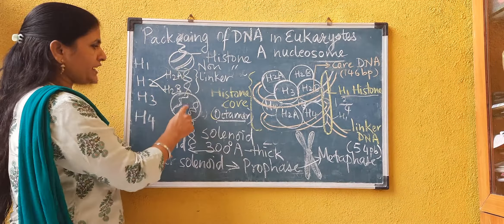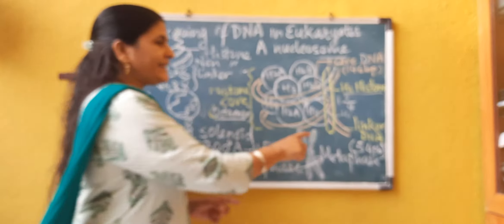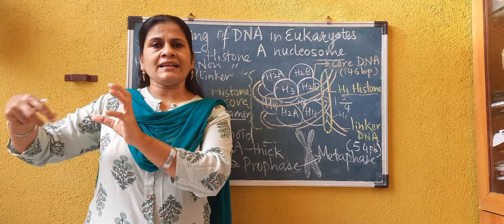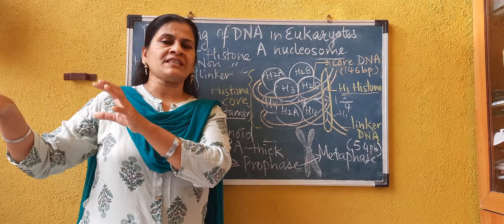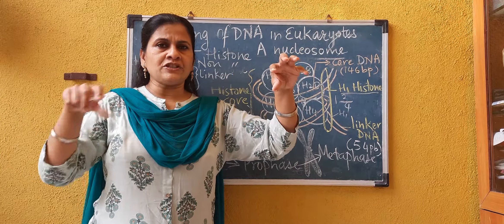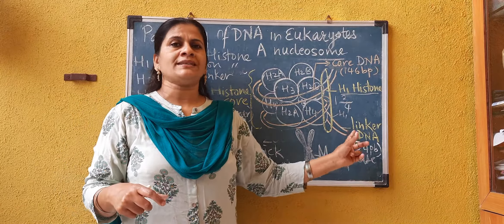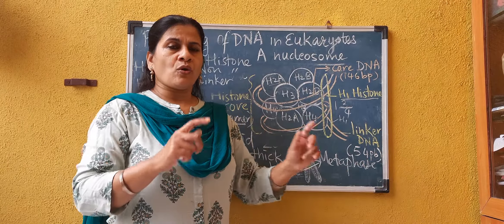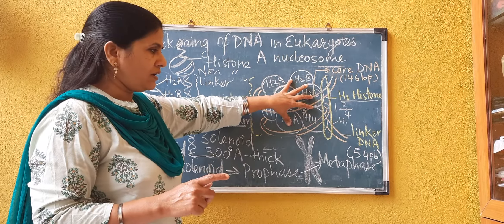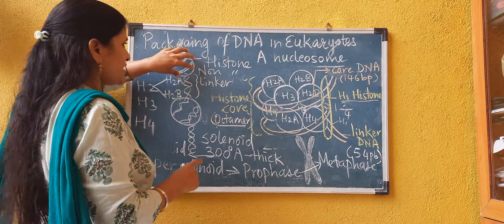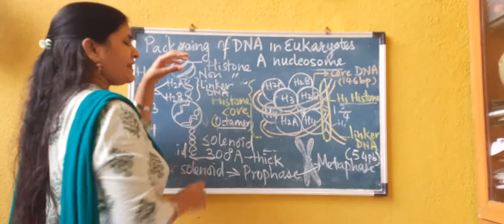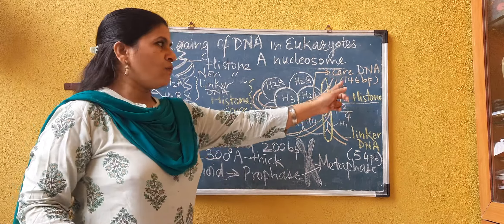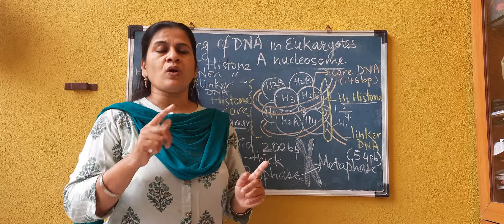The DNA which joins the two histone cores is called linker DNA. The DNA leaves the histone core, and after a short gap it enters into another histone core; again it leaves, and after a gap it joins with the second histone core. So what you get is: bead, string, bead, string — and that string is nothing but the DNA called linker DNA. The length of linker DNA is 54 base pairs. One nucleosome is made up of a histone core and linker DNA. The length of DNA in one nucleosome will be around 200 base pairs — 146 plus 54 equals 200 base pairs.